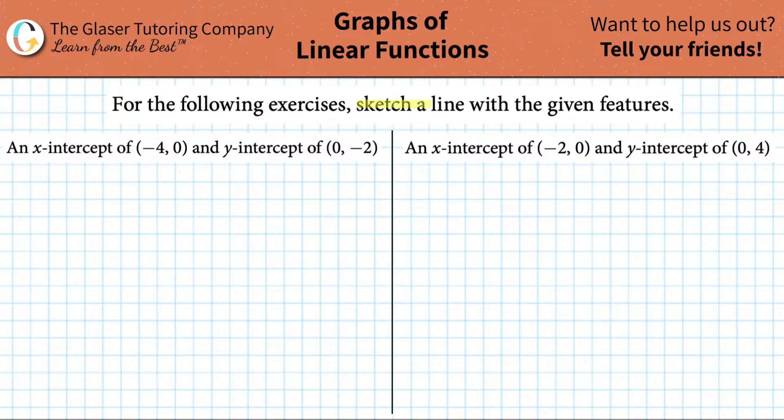For the following exercises, sketch a line with the given features. So the first one says we have to have an x-intercept of negative 4, 0, and a y-intercept of 0, negative 2.